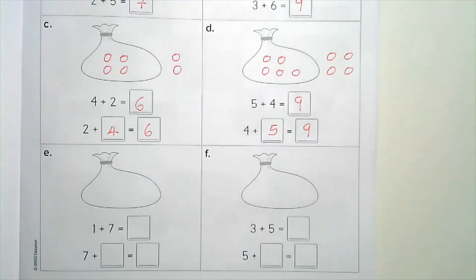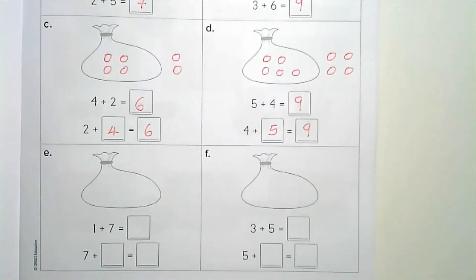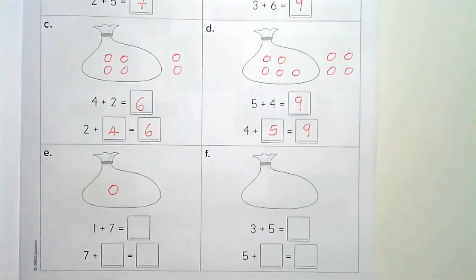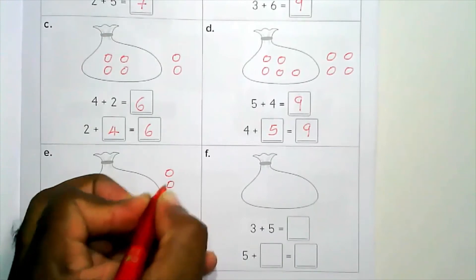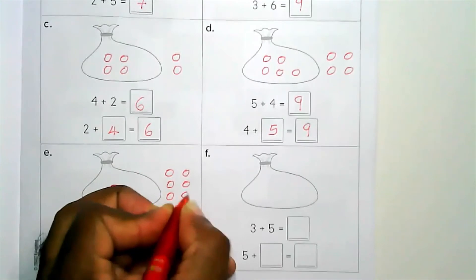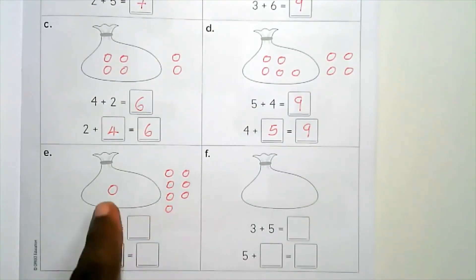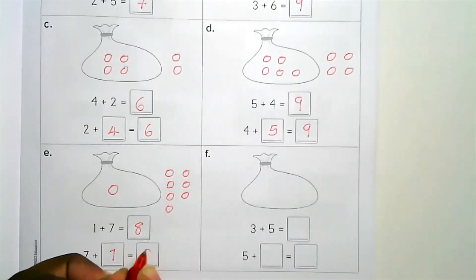Part E: we're dealing with one and seven. Draw one on the inside and seven on the outside — one, two, three, four, five, six, seven. Starting with the greater number and count on: seven, eight. We write eight. Seven plus one equals eight.